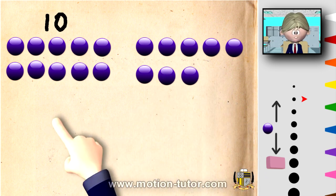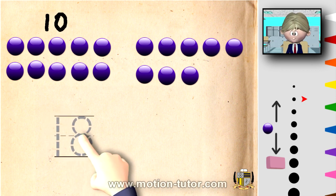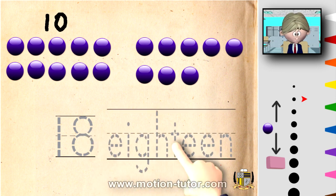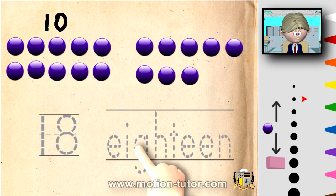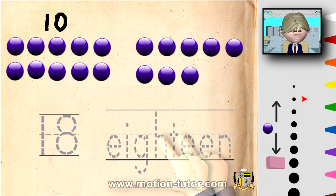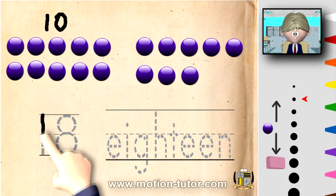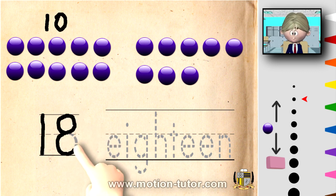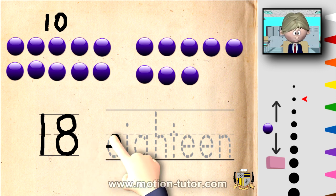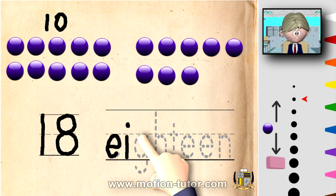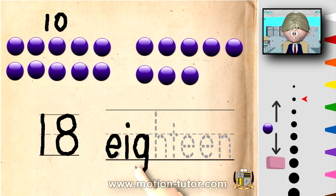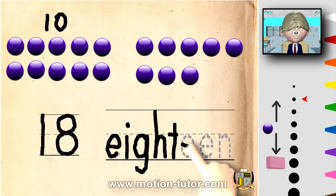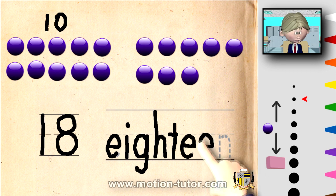And how does 18 look? 18 looks like that. And 18 is spelled like that. So, 10 and 8 more is 18. Let's write that — 18 is a 1 and an 8, and it's spelled E-I-G-H-T-E-E-N.